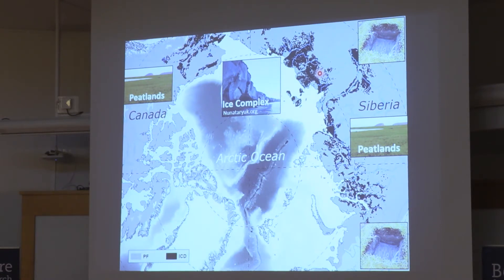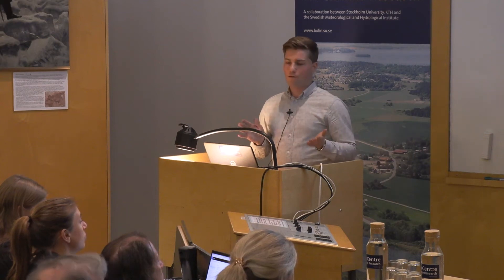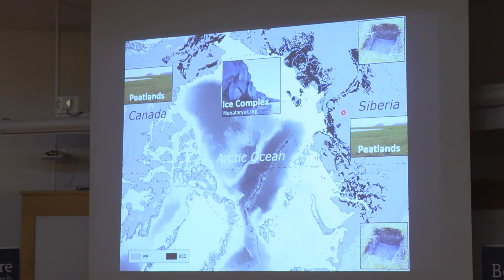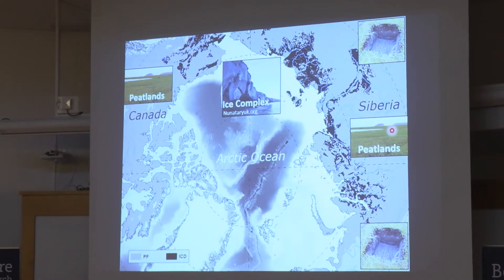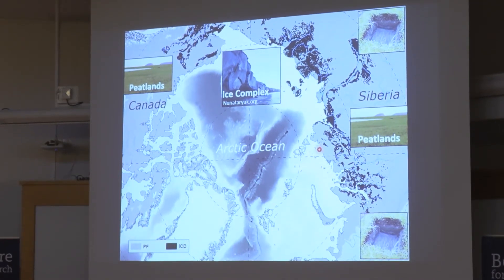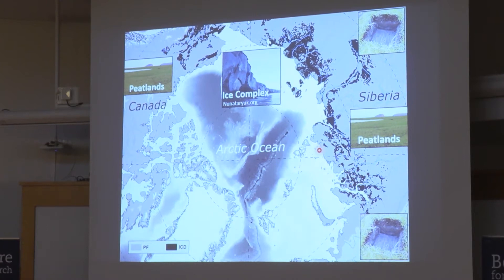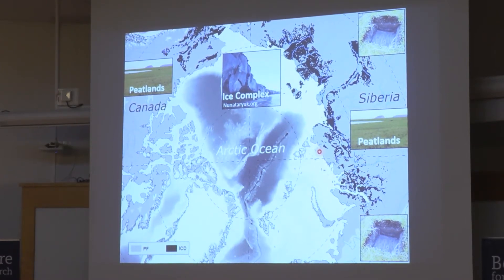You see ice complex deposits in Alaska but also in Siberia. Other regions were covered by glaciers and have none of those deposits. In the Canadian Arctic and western Siberian Arctic, peatlands evolved after the last glacial, at the beginning of the Holocene. This map also shows the distribution of permafrost — basically the whole circumarctic land region is affected. The Arctic Ocean is the main sink of laterally transported permafrost carbon.